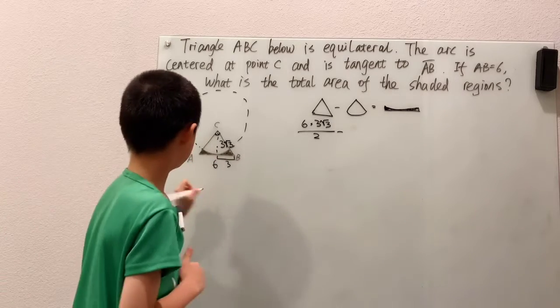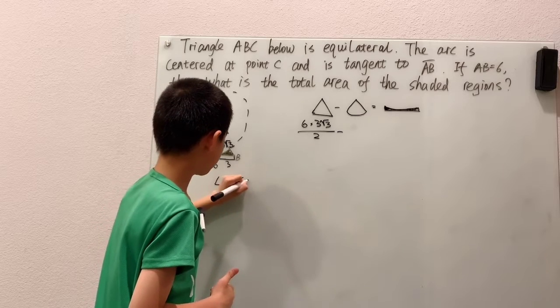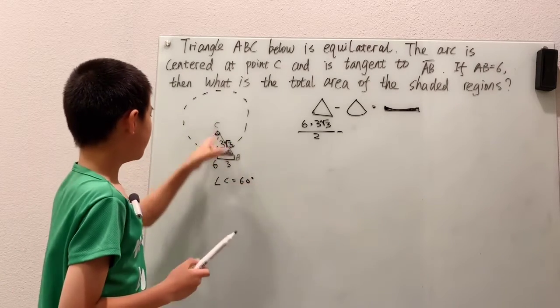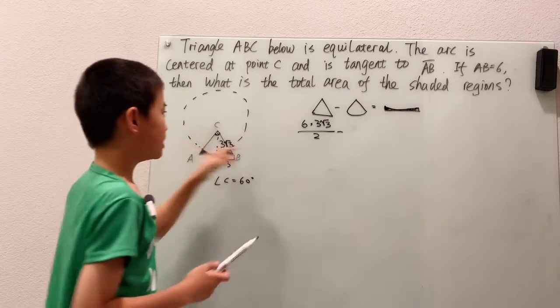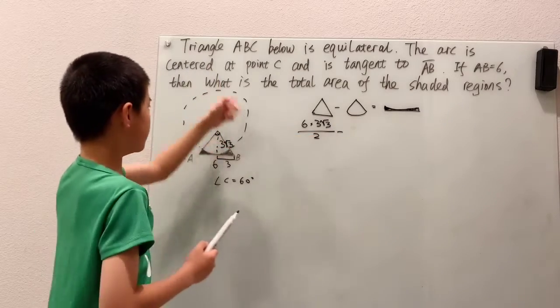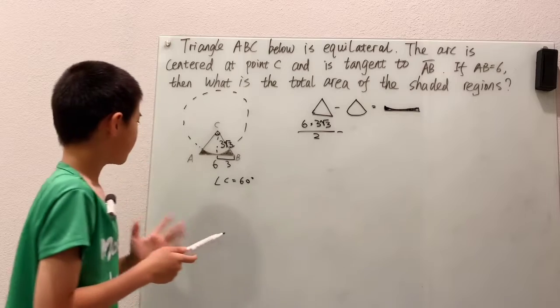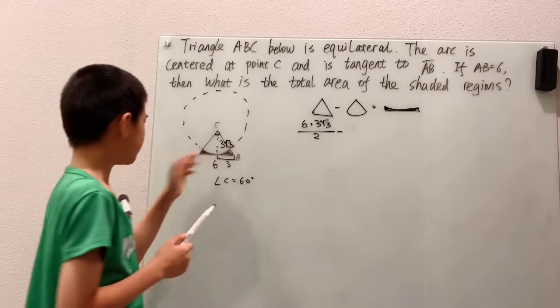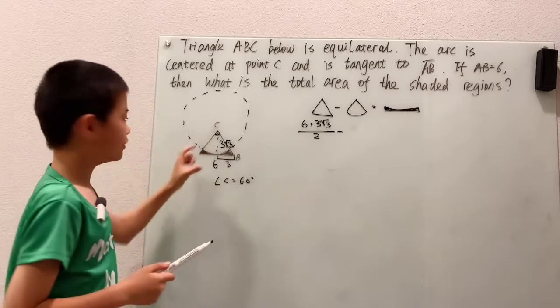and because angle C here is part of an equilateral triangle, that means, I'll just write it out here, because angle C is 60 degrees, then that means there's six of these identical sectors in the whole circle. Now, that gives us a little less pain,